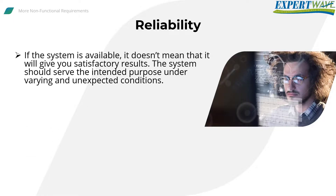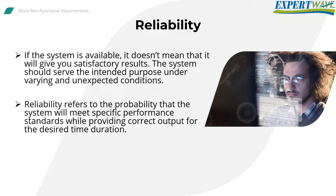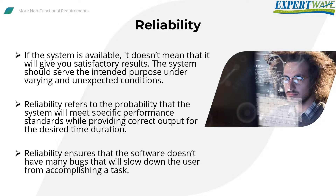Reliability: if the system is available, it doesn't mean that it will give you satisfactory results. The system should serve the intended purpose under varying and unexpected conditions. To measure reliability, we need to measure how well the service fulfills the necessary business performance needs. Reliability refers to the probability that the system will meet specific performance standards while providing correct output for the desired time duration. Reliability ensures that the software does not have many bugs that slow the user from accomplishing a task — more specifically, whether I can depend on the software to accomplish my work.